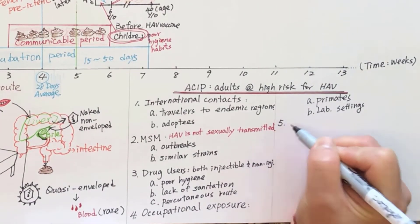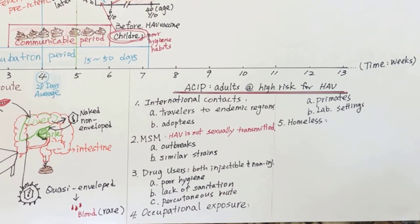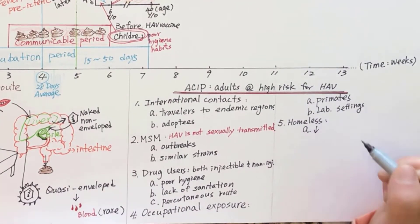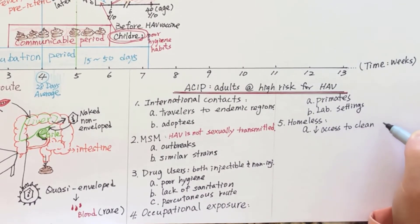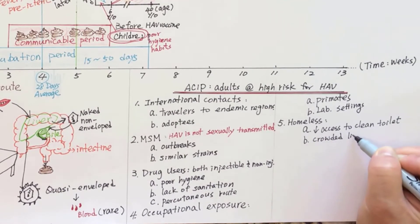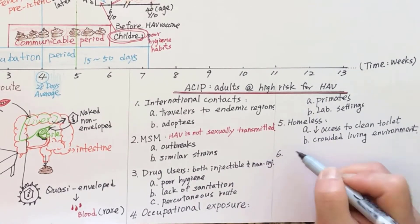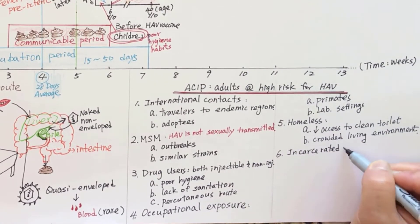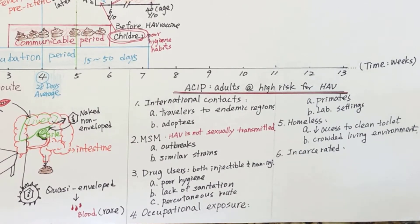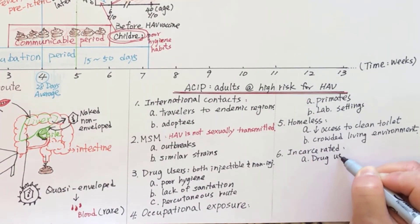Homeless individuals are exposed to hepatitis A infection due to inability to adhere to non-vaccinated preventive strategies. For example, access to a clean toilet is usually a challenge for homeless people, and they cannot avoid crowded living environments. Incarcerated people are at risk for hepatitis A infection due to their association with the other two at-risk populations: drug users and homeless people.